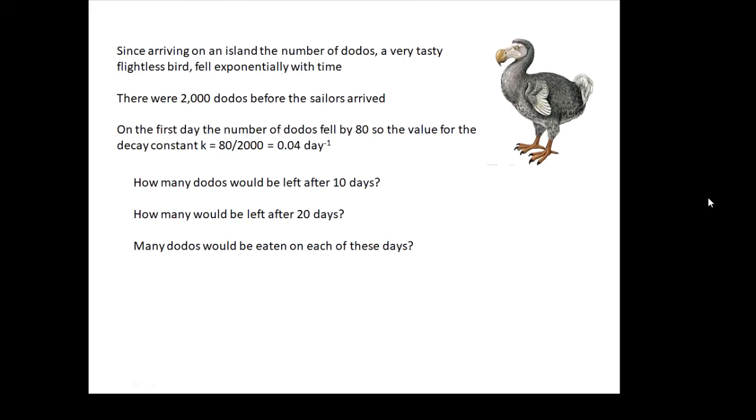Here's a nice question you can have a go at. Since arriving on an island, the number of dodos, a very tasty, very stupid, flightless bird, falls exponentially with time. Now, before the sailors arrived and brought all their cats and dogs with them, there were 2,000 dodos on the island. On the first day, the number of dodos fell by 80.